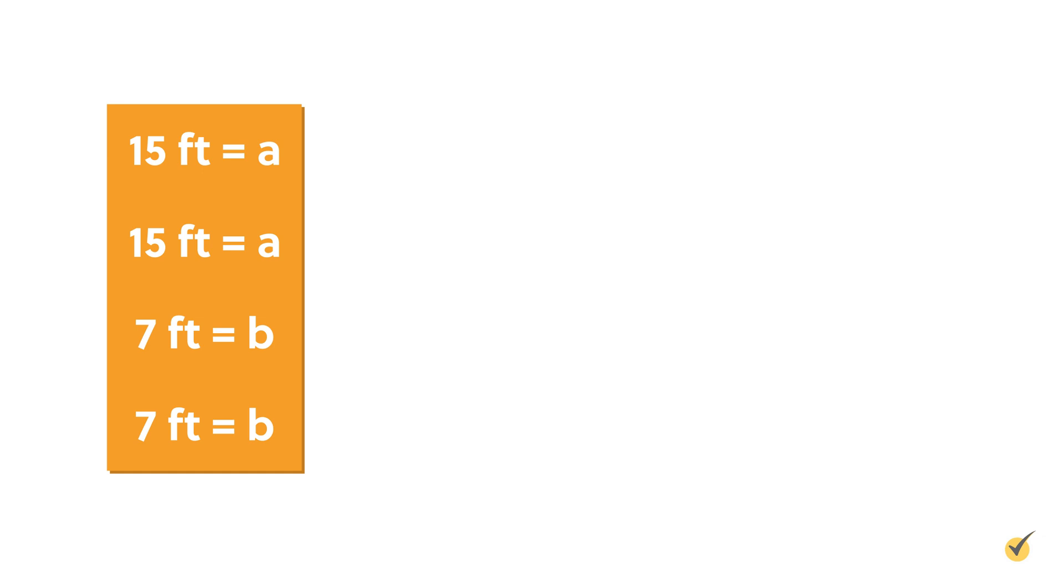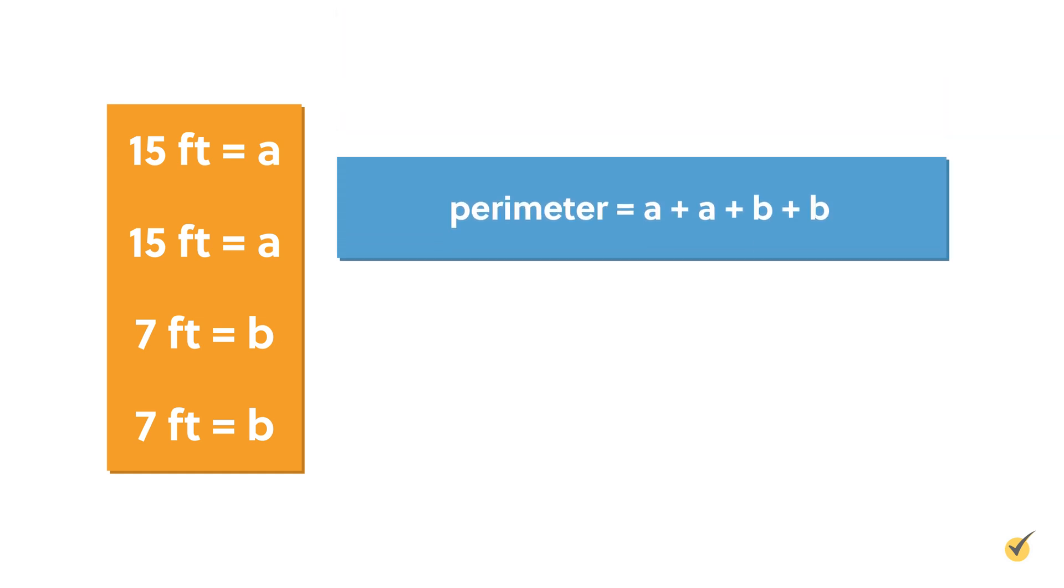Assuming 15 is equal to a and 7 is equal to b, we can use the following formula: Perimeter equals a plus a plus b plus b.